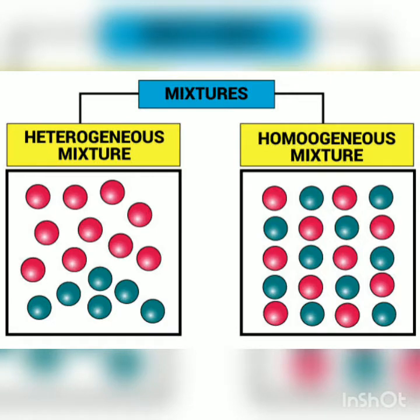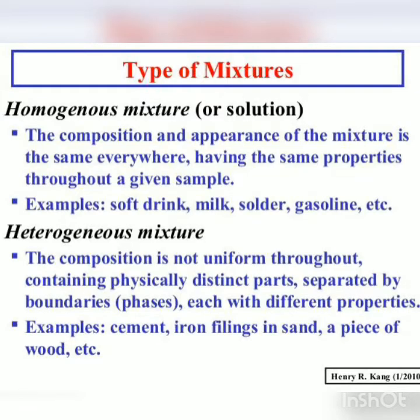Yesterday we discussed the two types of mixtures, that is heterogeneous and homogeneous mixtures. When we talk about homogeneous mixtures, this mixture consists of different constituents which are not at all visible through naked eyes. Their boundaries of separation are not visible and they are spread uniformly in the mixture. On the other hand, in a heterogeneous mixture, the composition is not uniform throughout and we can easily see the separate boundaries of the constituents.